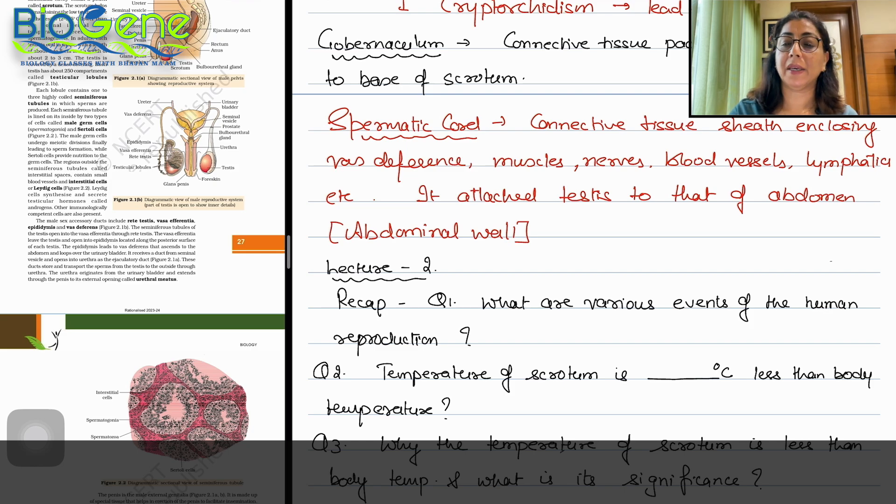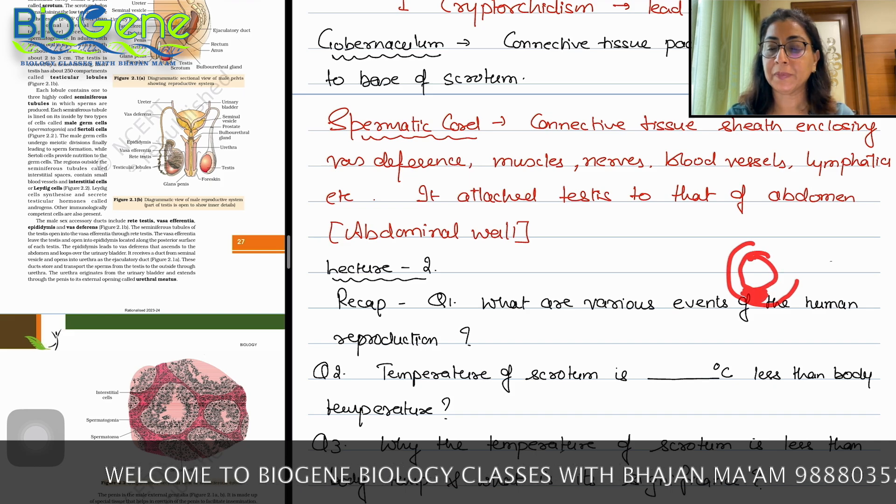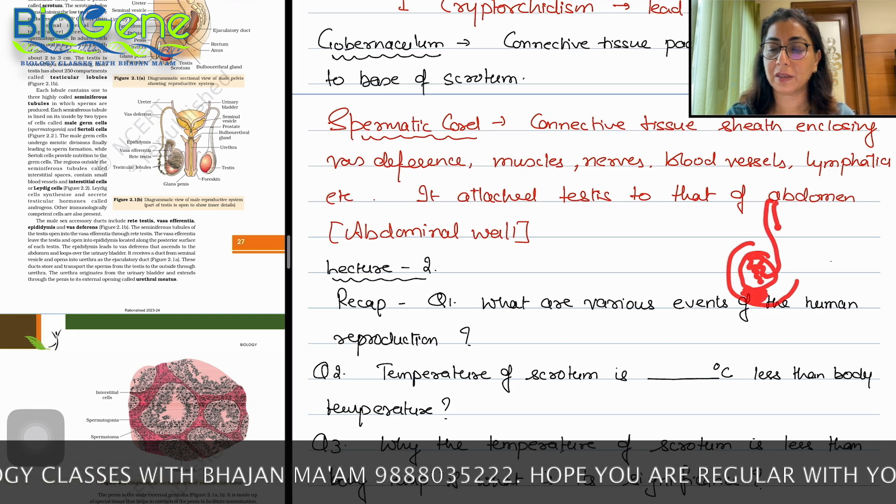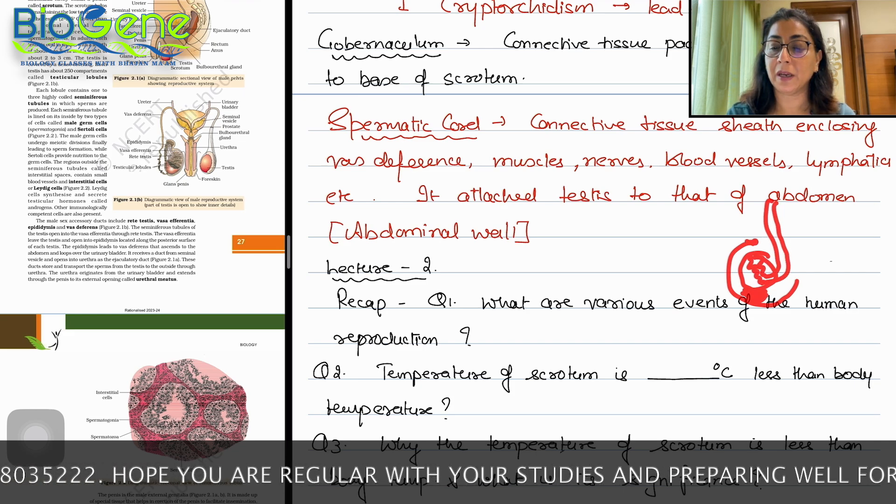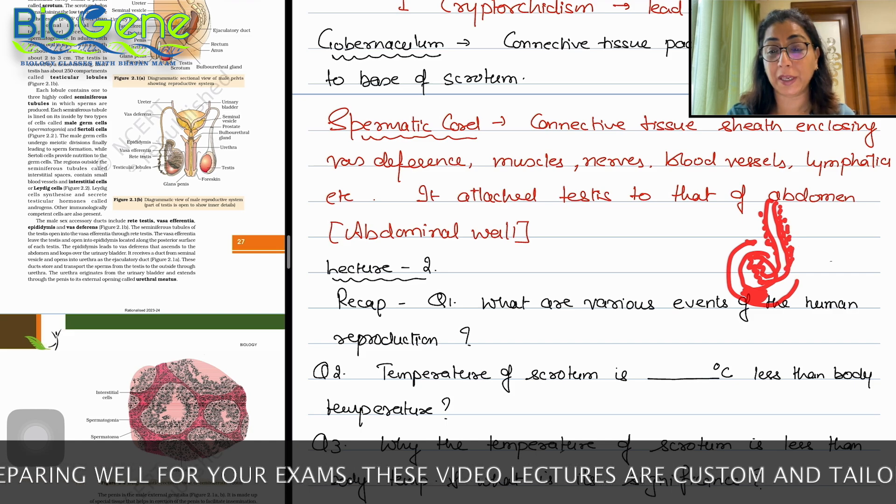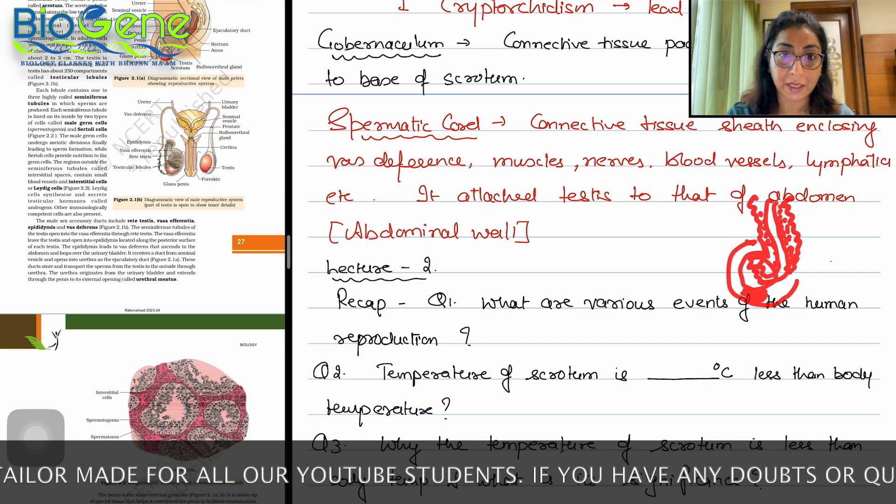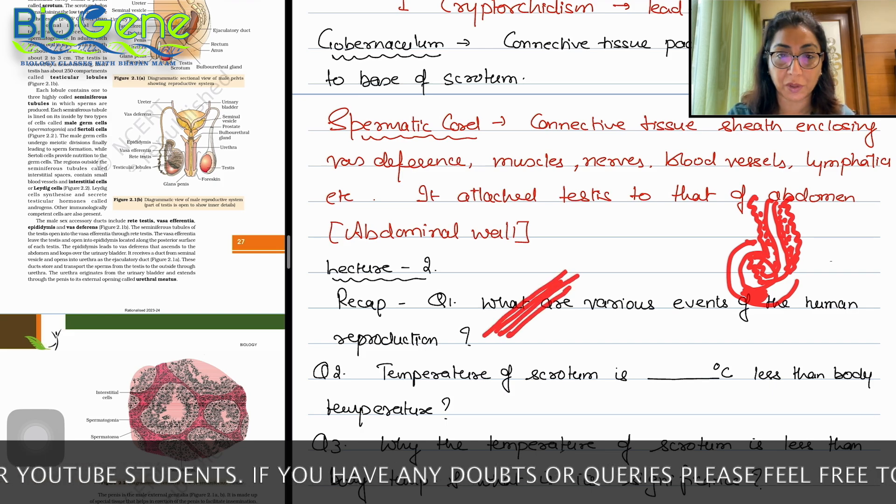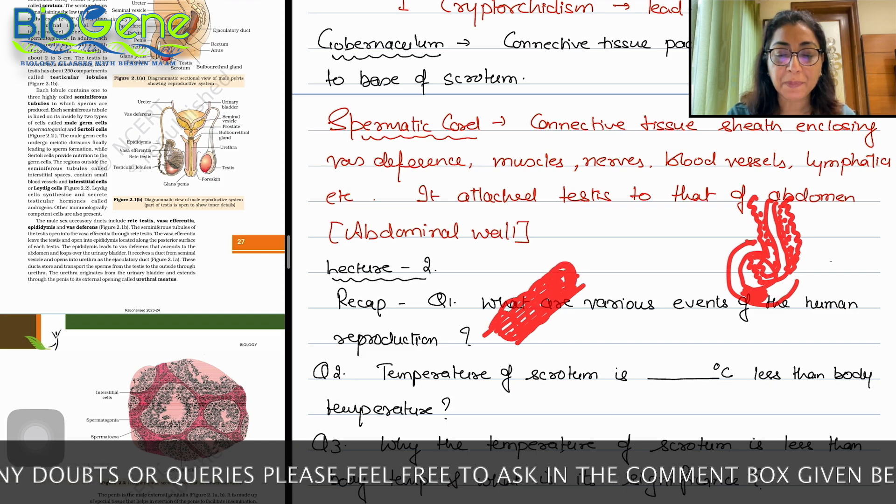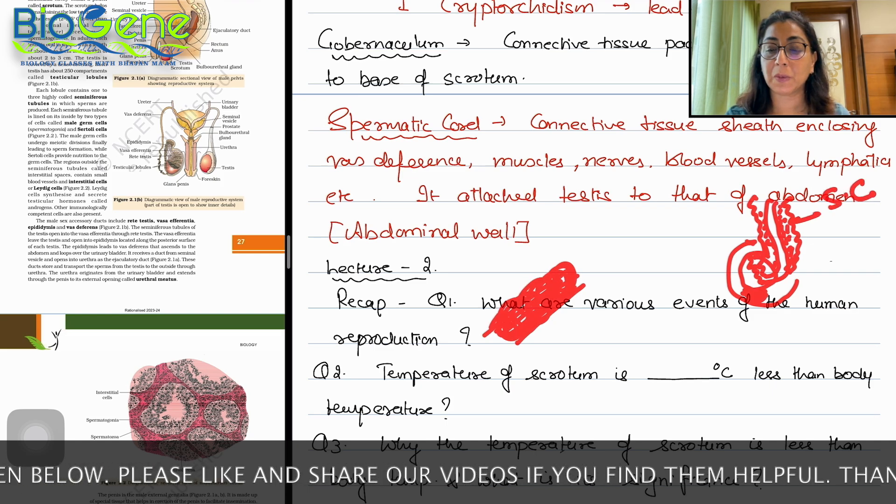If we can see in the male reproductive system, this is the scrotum and the testes are attached to the gubernaculum. Here is the epididymis and this is the vas deferens. Vas deferens, the muscles, nerves, lymphatics, all these things are in a connective tissue covering. As you can see, there are a lot of branches, so we have wrapped them with a tape.